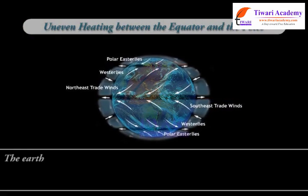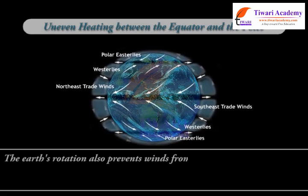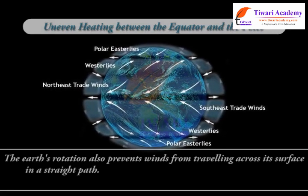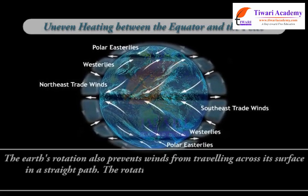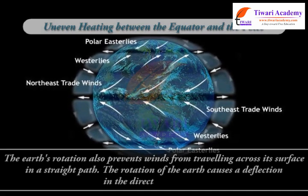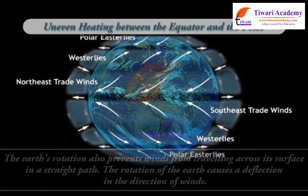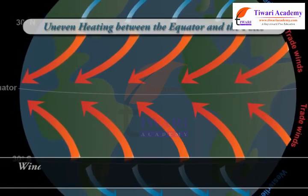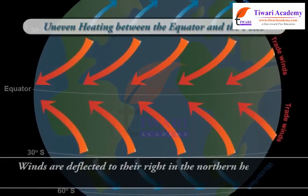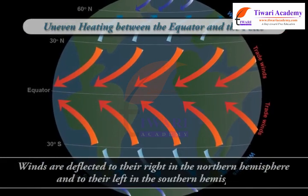The earth's rotation also prevents winds from travelling across its surface in a straight path. The rotation of the earth causes a deflection in the direction of winds. Winds are deflected to their right in the northern hemisphere and to their left in the southern hemisphere.